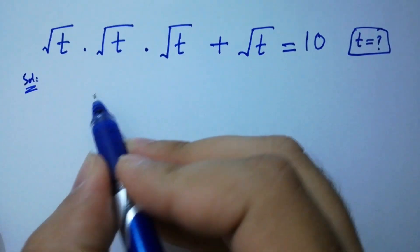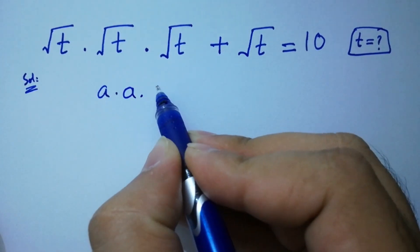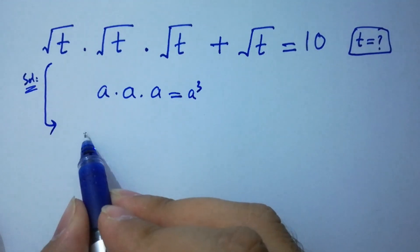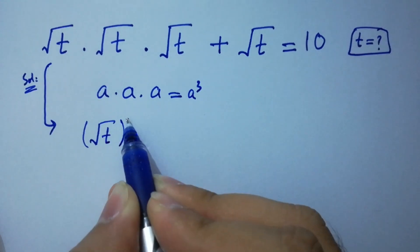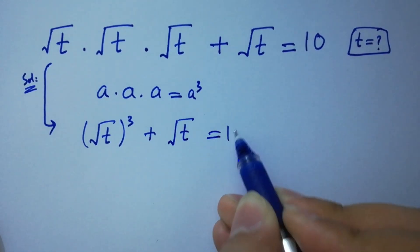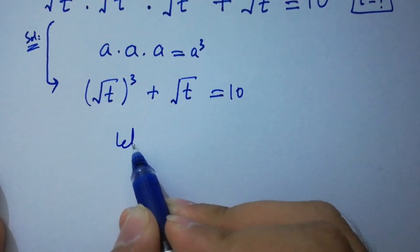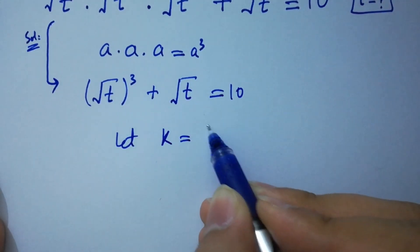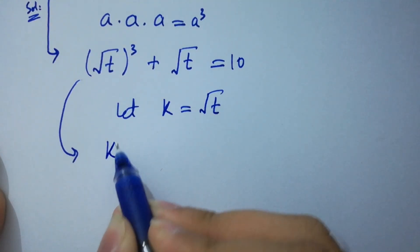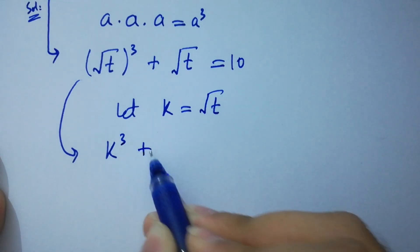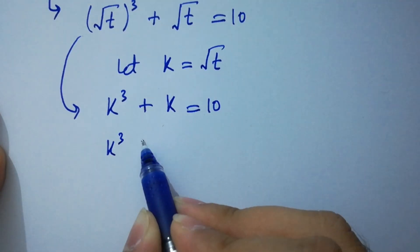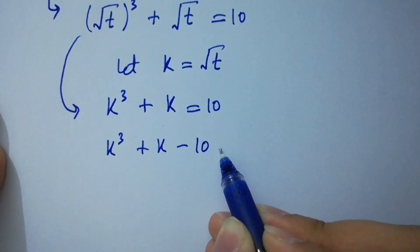As we know a times a times a equals a cube, so it will be square root of t cubed plus square root of t equals 10. Let k equal to square root of t. We have k cubed plus k equals 10, which can be written as k cubed plus k minus 10 equals 0.